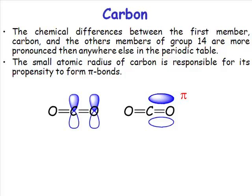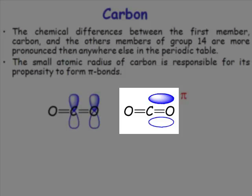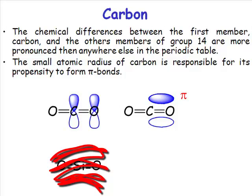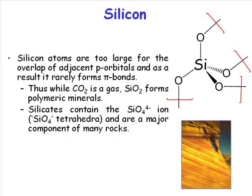The earlier elements in a group are much more likely to form multiple bonds than the later elements. So the structure of carbon dioxide is a multiply bonded structure, where the structure of silicon dioxide is not a multiply bonded structure. Silicon atoms are too large for the overlap of p orbitals.